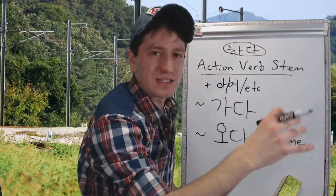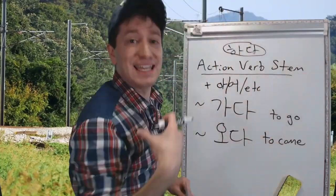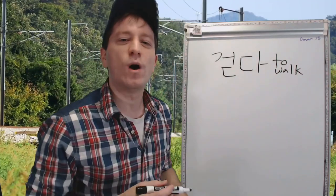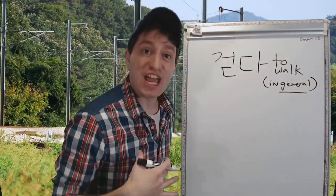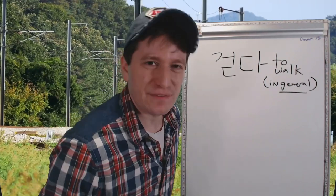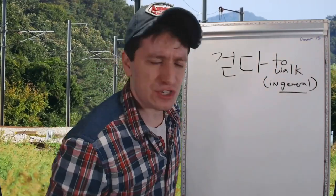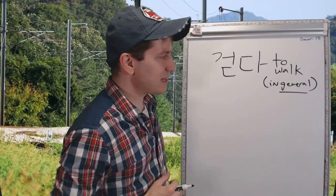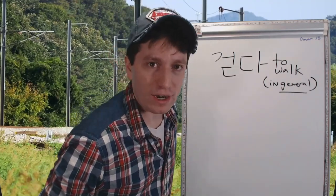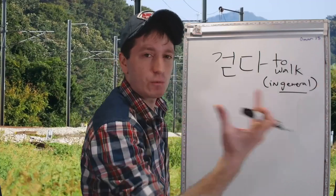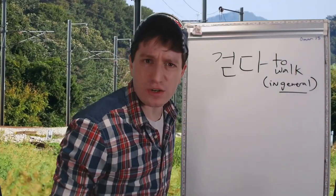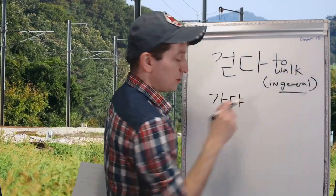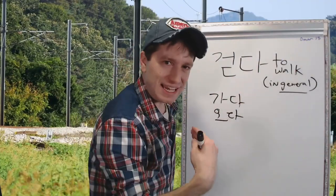So doing and then going somewhere, or doing and then coming here. The first verb is 걷다, to walk — to walk in general, not anywhere specifically, just in general. So you could say something like 'I enjoy walking.' You're not saying that you're walking to somewhere or from somewhere to here. You're just saying you like walking in general. 걷다 means to walk in general, not going somewhere and not coming here.